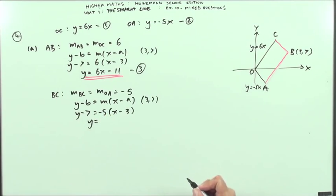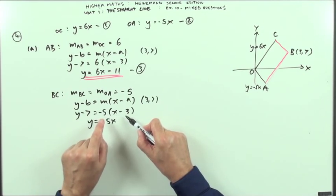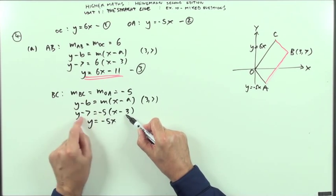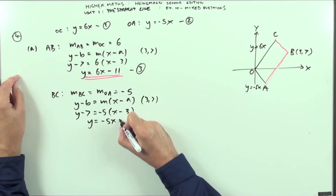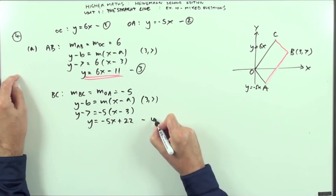It's all integers so it can go into the form Y equals negative 5X, that'll be plus 15 plus another 7 so it's going to be plus 22. I'll call that equation 4.